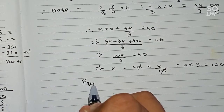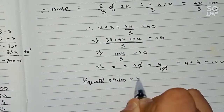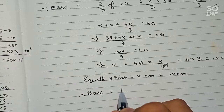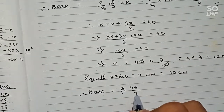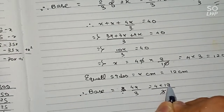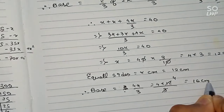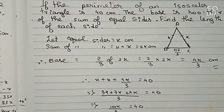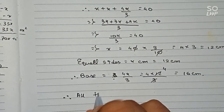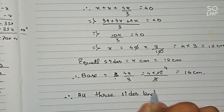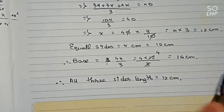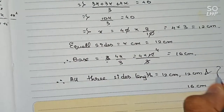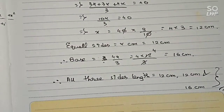Therefore, the equal sides we took as x centimeters will be equal to 12 centimeters each. The base equals 4x/3, which is 4 into 12 divided by 3. Three and twelve cancel, giving 4 fours are 16 centimeters. So the final answer: all three sides are 12 centimeters, 12 centimeters, and 16 centimeters. Thanks for watching this video — please subscribe to my channel for more solutions like this.